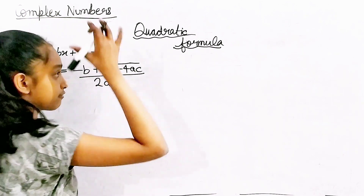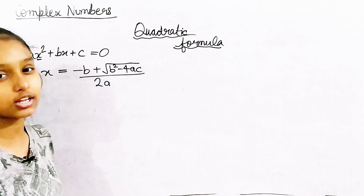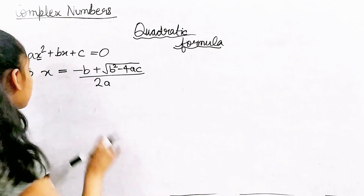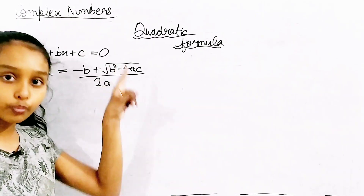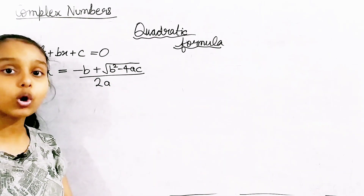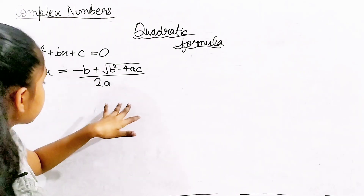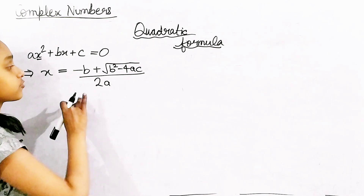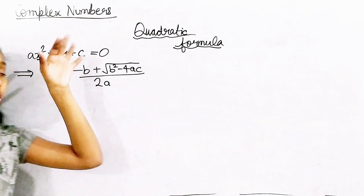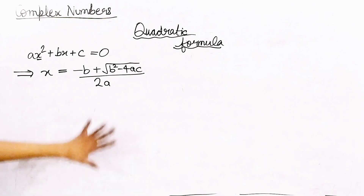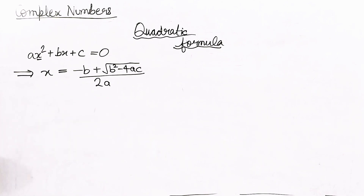We just have 2a in the denominator. So we have to remember this formula. It is: x = (−b ± √(b² − 4ac)) / 2a. I hope we're clear with this.